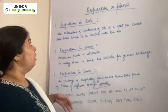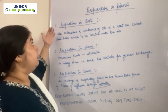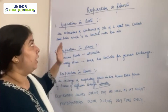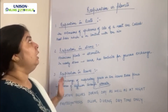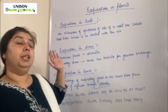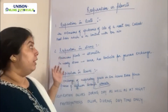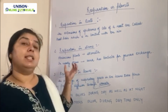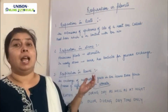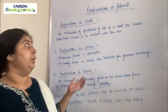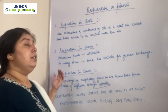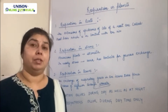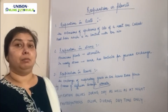So this was all about respiration in roots, stems, and leaves, where we have seen that in plants, respiration takes place individually, not as a single unit as in humans or animals.